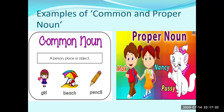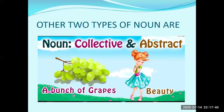I hope the concept of common noun and proper noun is clear. Now children, we are going to study about two other kinds of nouns. They are called collective noun and abstract noun.